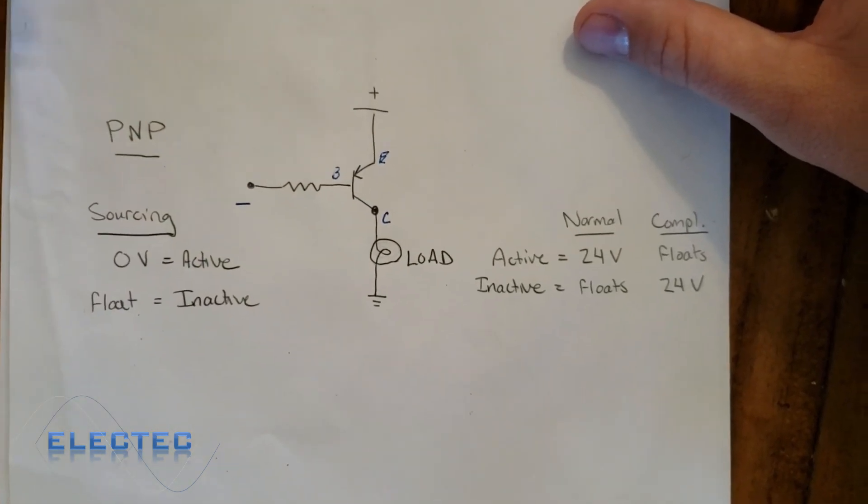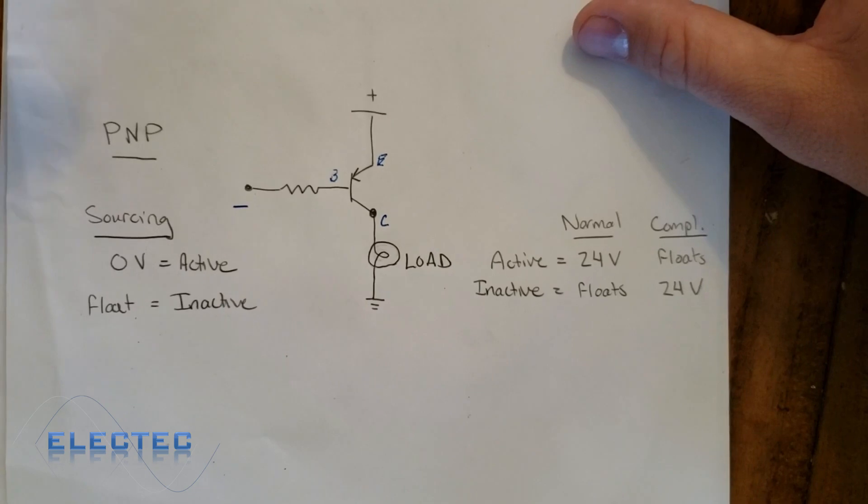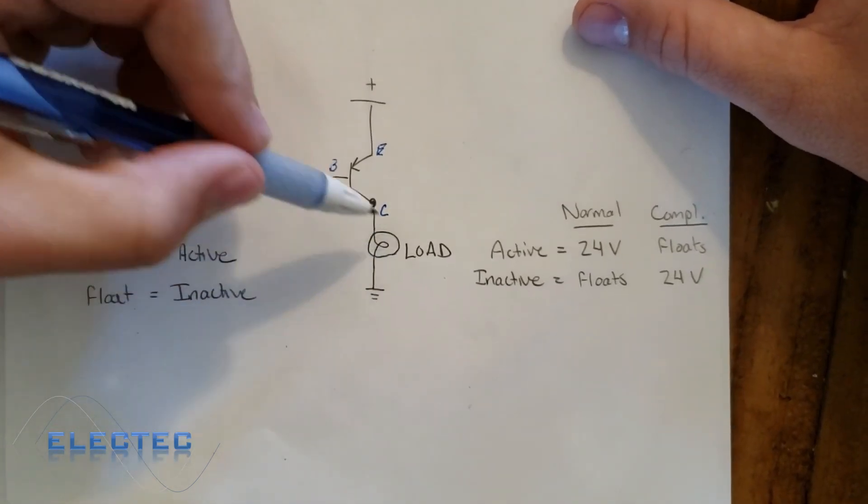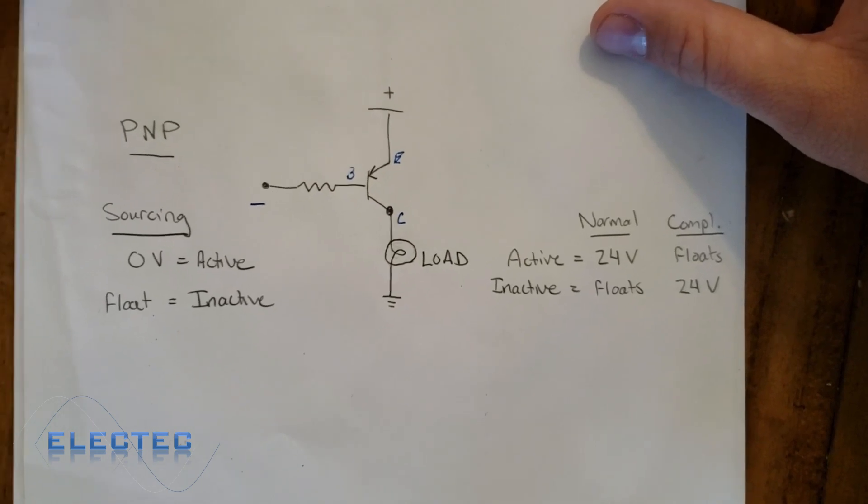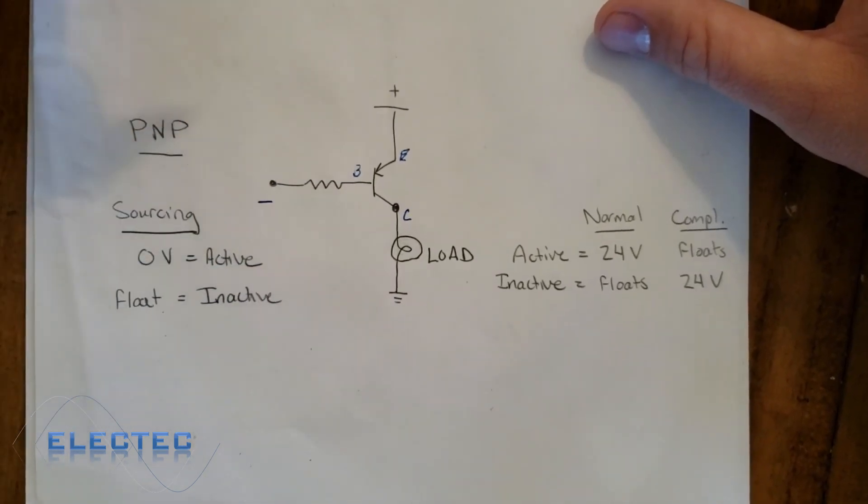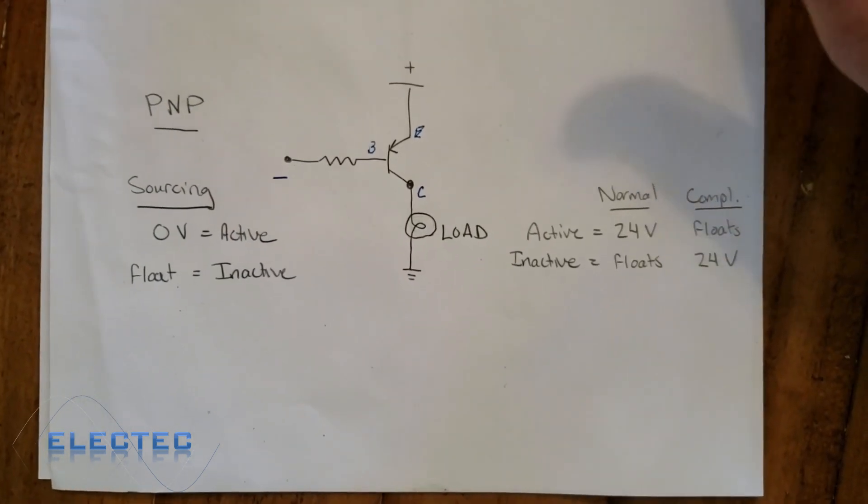This is common in the U.S., because in the U.S., we normally like our loads to be turned on by power. If you go to China, a lot of times they use NPN transistors because their loads turn on by zero volts.